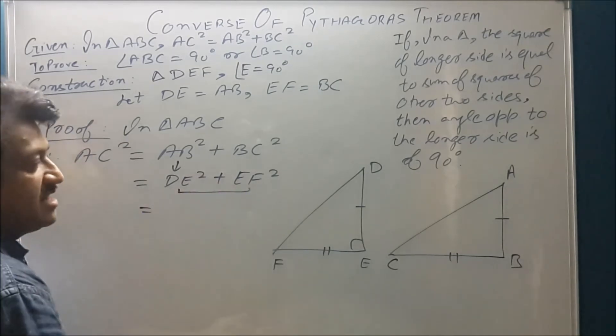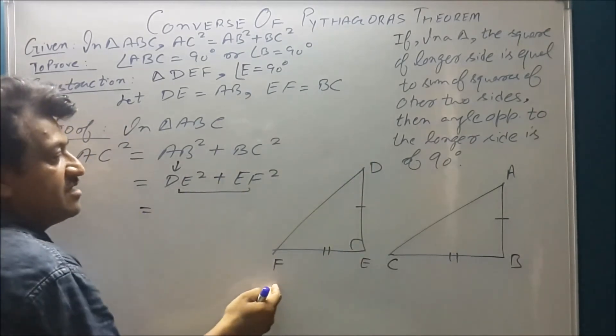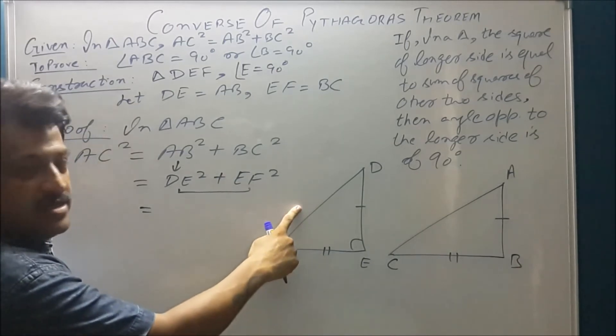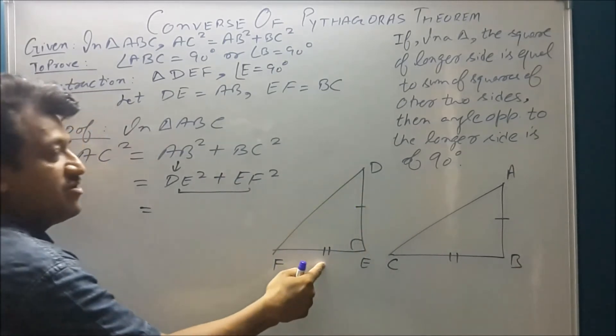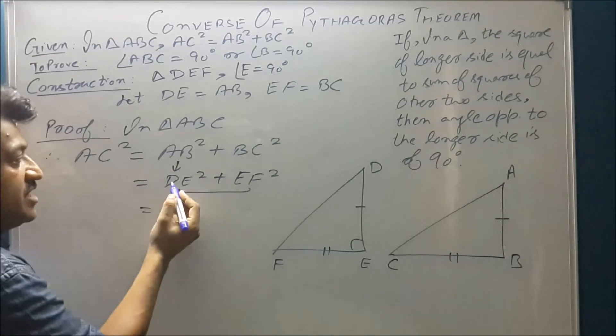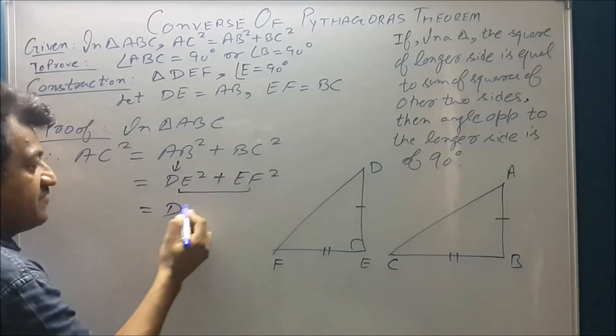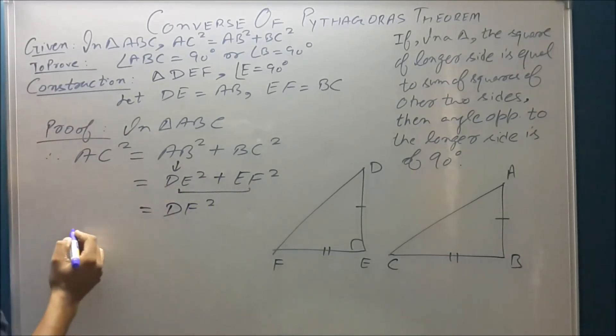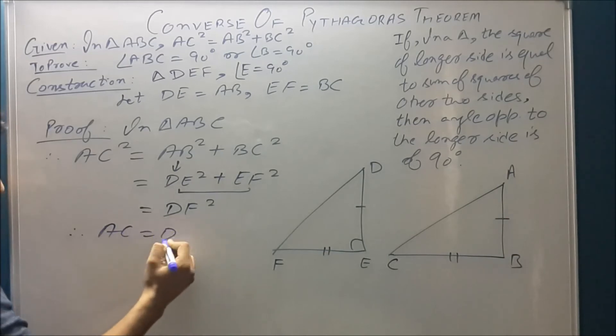Pythagoras says that in a right triangle, the square of hypotenuse is equal to sum of the squares of other two sides. So DE square plus EF square becomes DF square. Now you can check AC is equal to DF.